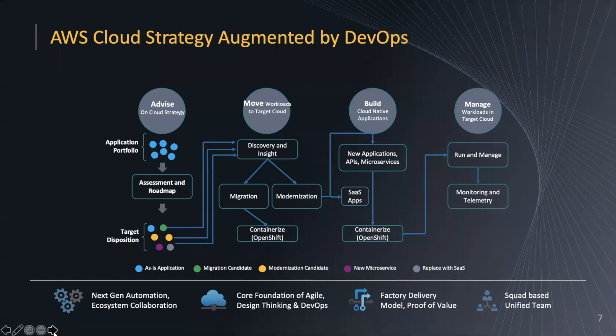When you take this continuous modernization approach, you need to focus on next-gen automation and ecosystem collaboration — leveraging ecosystem tools to drive the right automation. Your core foundation is going to be agile, design thinking, and DevOps. You co-create with your client, you co-execute with your client, and you collaborate with your client to meet the end-to-end digital transformation agenda. That's the overarching AWS cloud strategy augmented by DevOps.